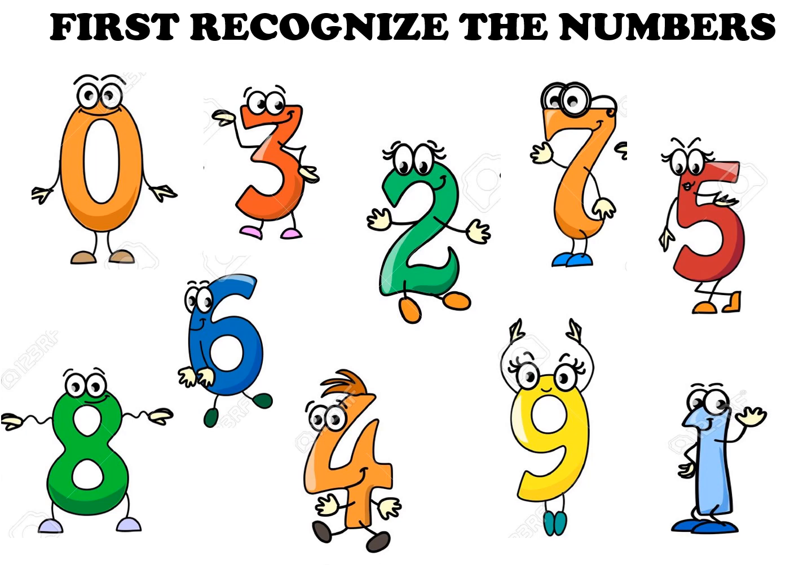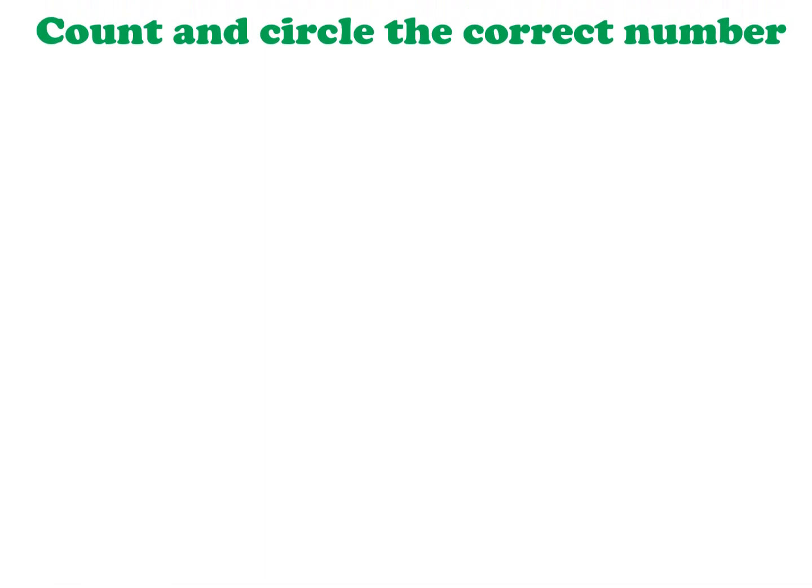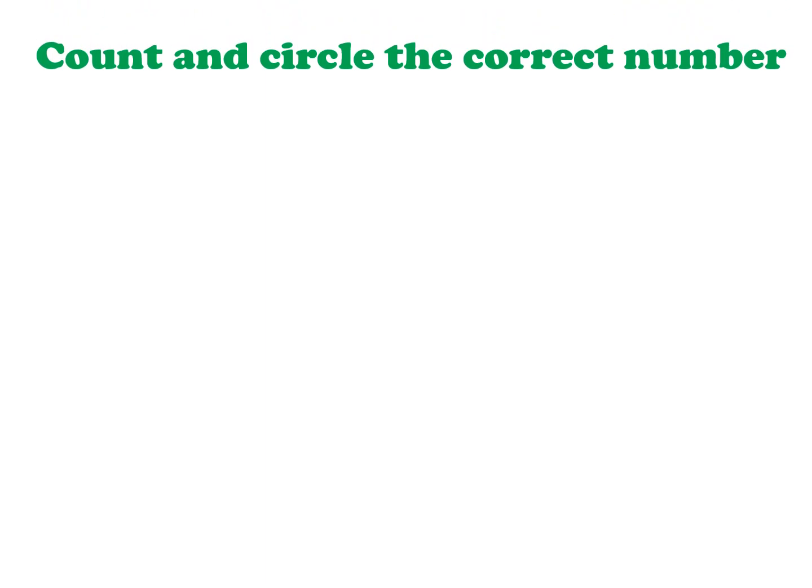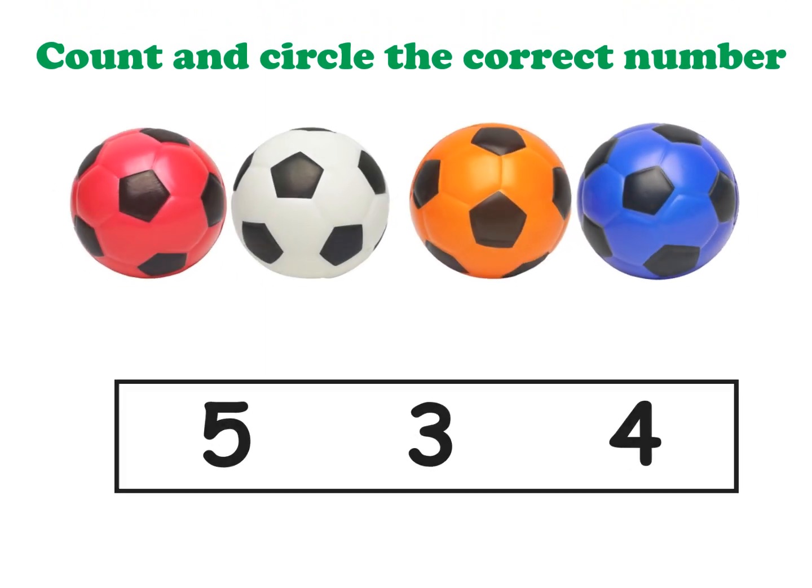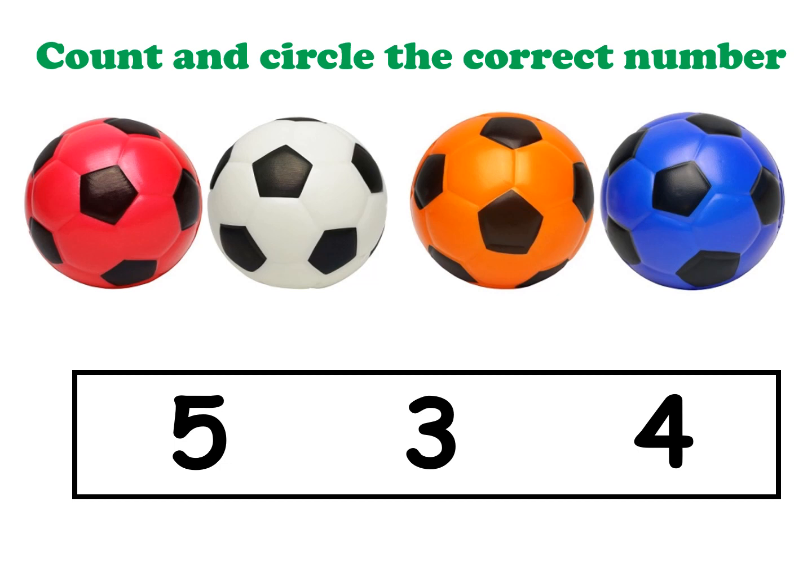I think we can begin the game. Now children, to begin this game, first you will count the number of balls that you see. You have a red ball, you have a white ball, you have an orange ball and a blue one. Now let us begin counting these balls. One, two, three, four. Now we have counted four balls.